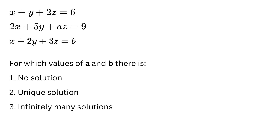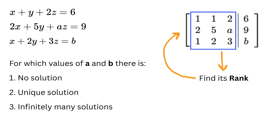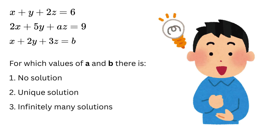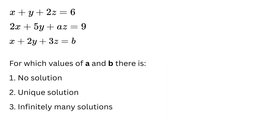Generally, to solve such problems people tell you to make an augmented matrix, find its rank, and compare it with the rank of the coefficient matrix to decide if the system has a unique, infinite, or no solution. But the way we are going to approach it is simpler and more intuitive — we'll look at how one equation relates to another.